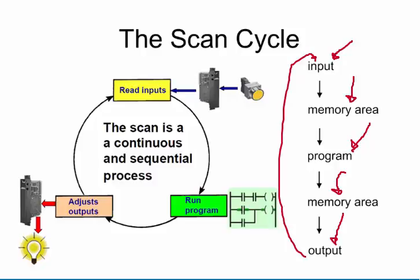The time by which the input is scanned, the output is set, and then the input is scanned again is referred to as the scan time. The scan time depends upon a couple of clear parameters: how many input and output units there are, the length of the program, and any other routine or function that is heavily influencing the mathematical or program capabilities of the CPU.